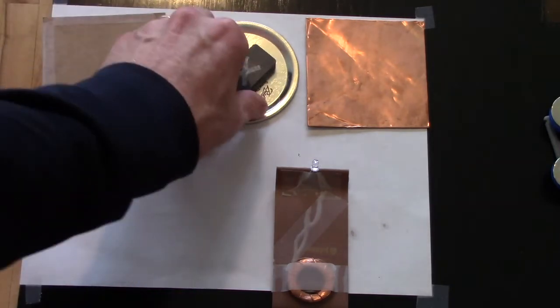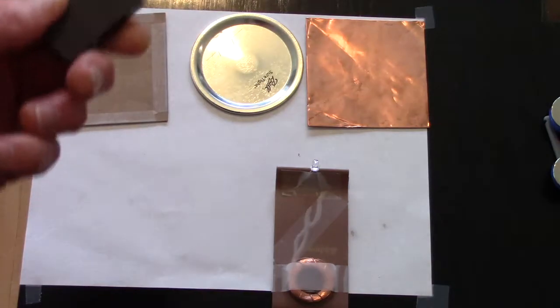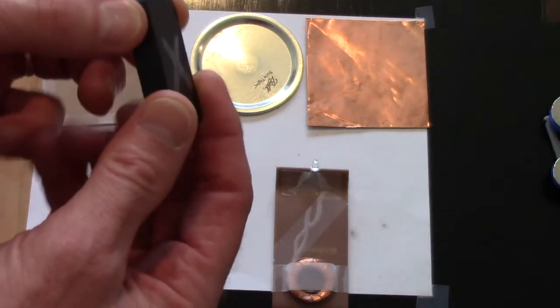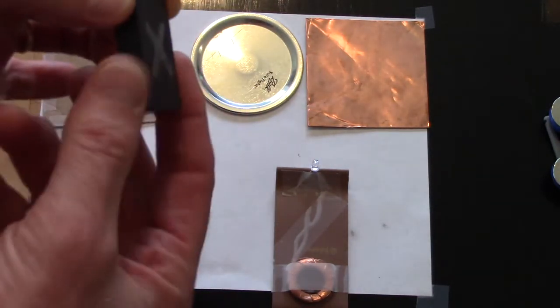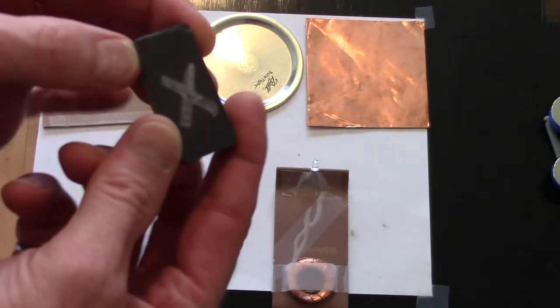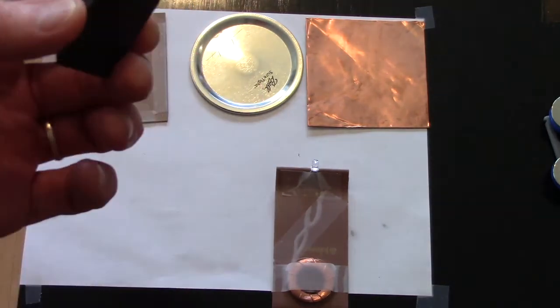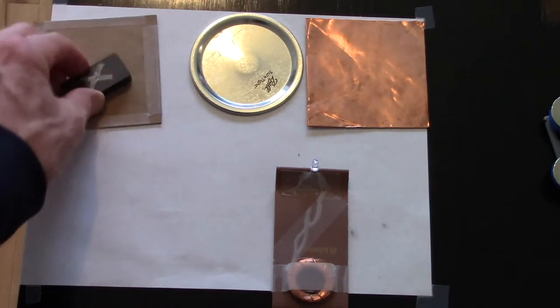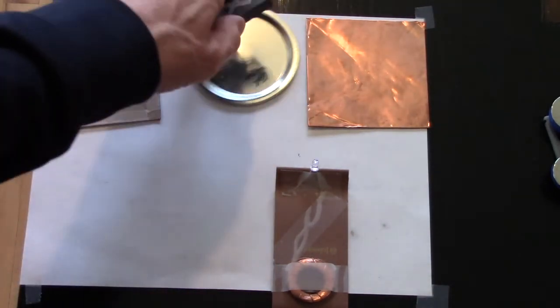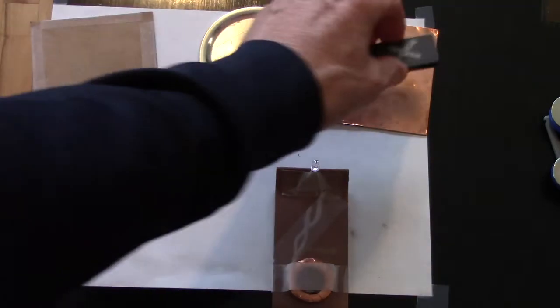In the previous lesson, students investigated magnets and magnetic fields that are in the space around the magnet. They looked at how magnets interact with three different materials: cardboard, steel, and copper.